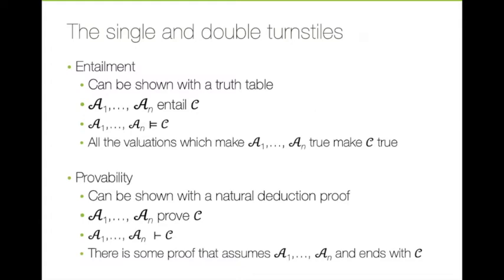Provability, on the other hand, was the notion we used to define validity when we were studying natural deduction. If A1 to AN proved C, we would say we have a valid argument. The meta-linguistic symbol for provability is the single turnstile. We can write A1 to AN single turnstile C when we can construct a proof that starts by assuming A1 to AN are true and proves that C is true from those — that is, a proof that assumes A1 to AN and ends with C.